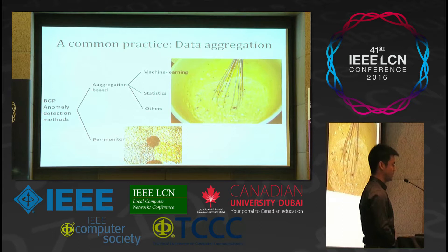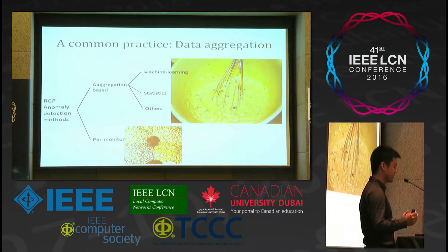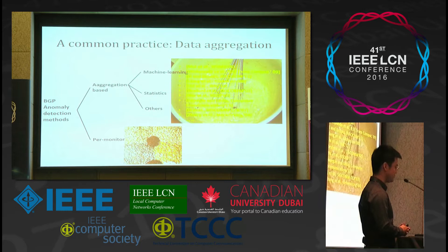There is a common practice in BGP measurement: data aggregation. For example, in the domain of BGP anomaly detection methods, there are two types of methods — aggregation-based or per-monitor. As the picture indicates, the aggregation-based method is to aggregate data from all monitors together, so that the differences between monitors are not distinguished. The per-monitor methods distinguish the differences between monitors. We find that most works are of the first type, and only few of the second type.